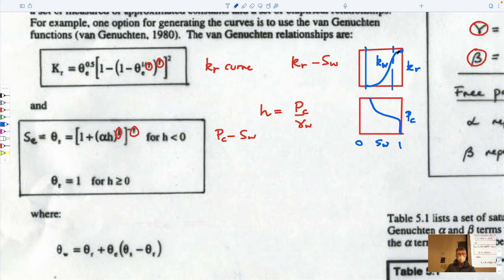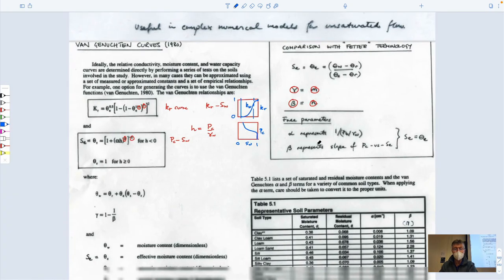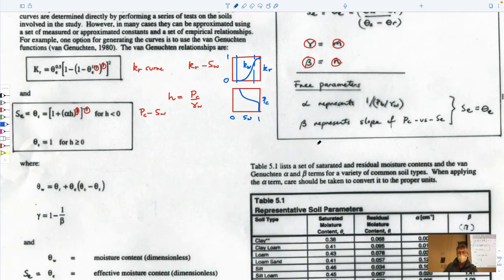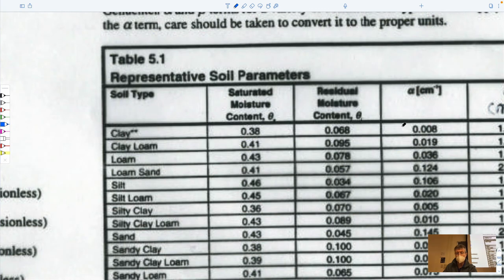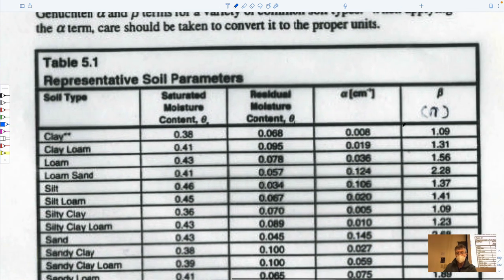The hydraulic conductivity is given by the saturated conductivity (at 100% water saturation) multiplied by the relative permeability term, which is defined as a function of m, n, and alpha. The two relationships — capillary pressure versus saturation and relative permeability versus saturation — sit directly above each other when plotted, which is the behavior we've been discussing.